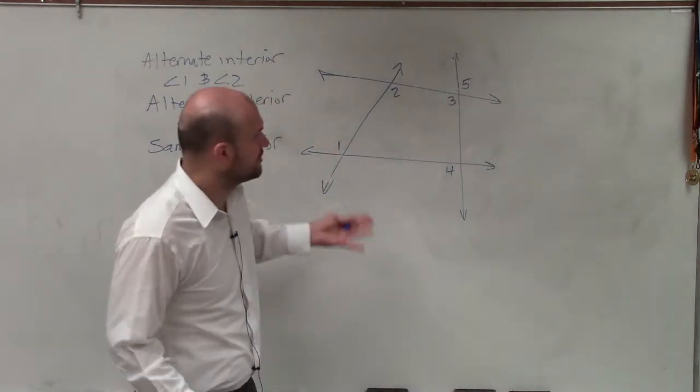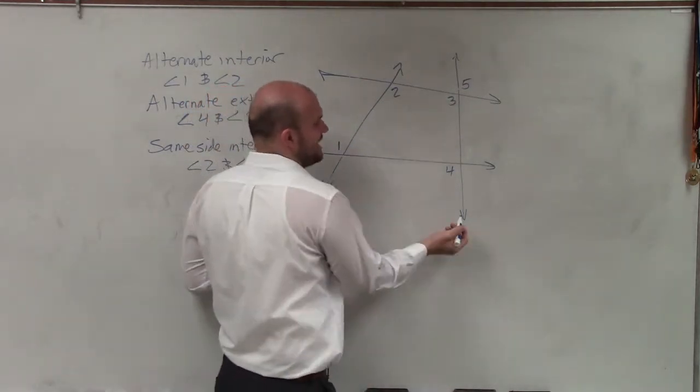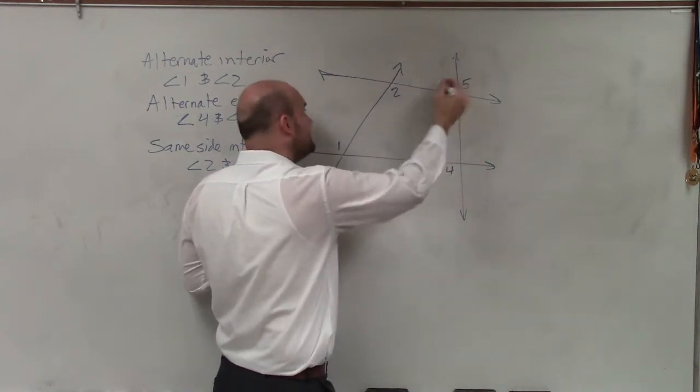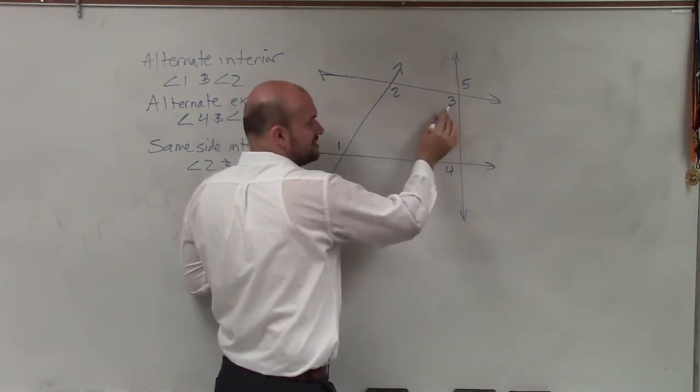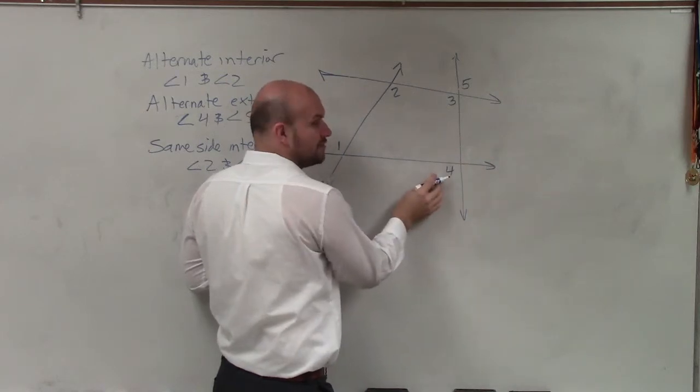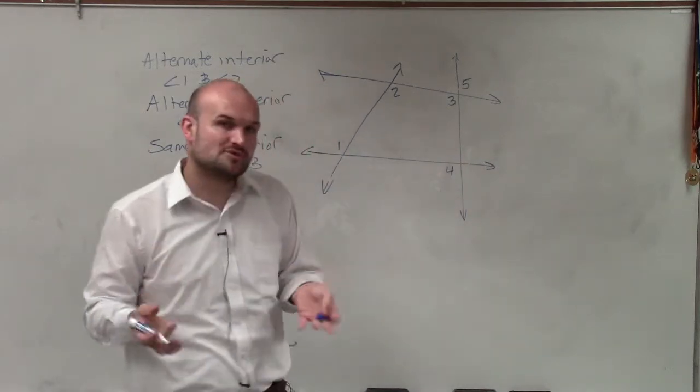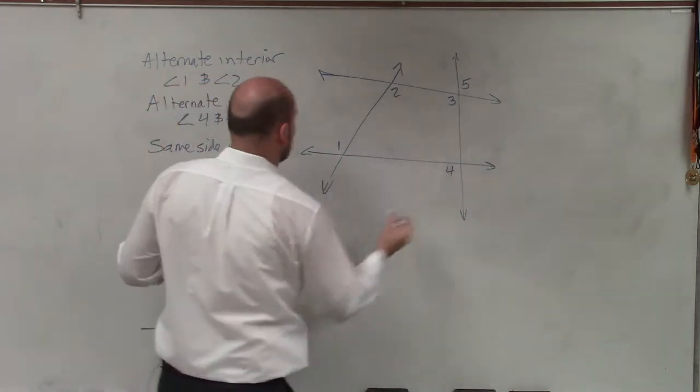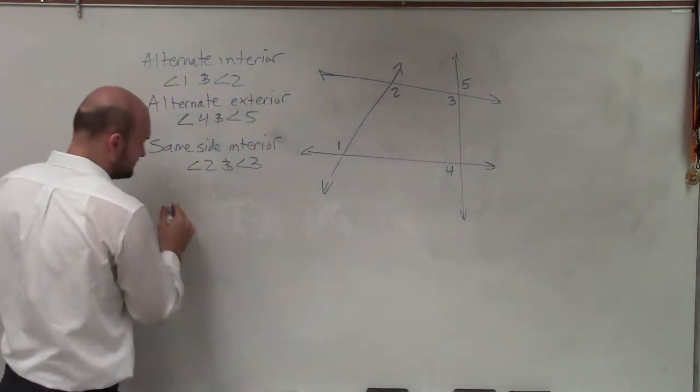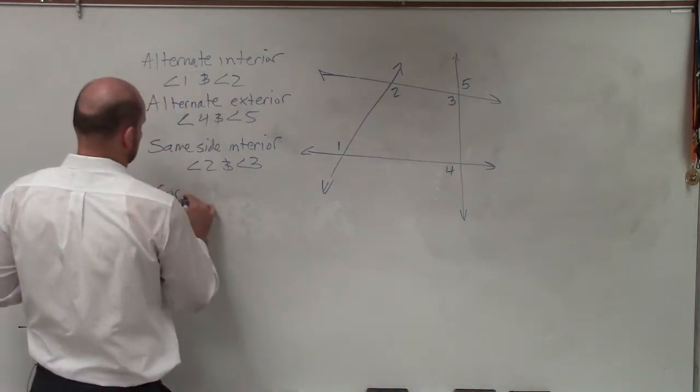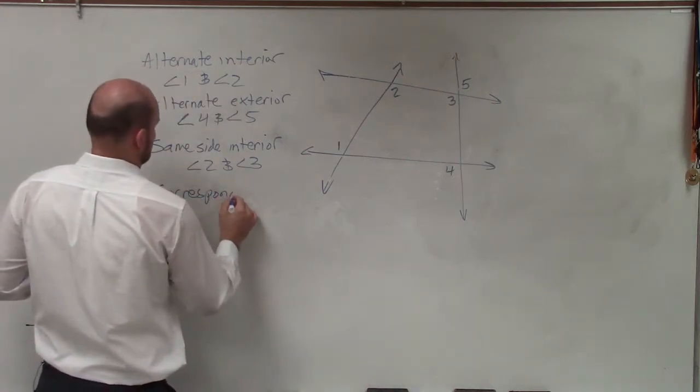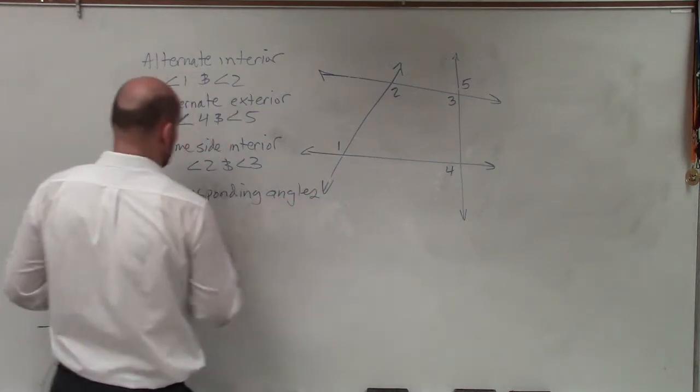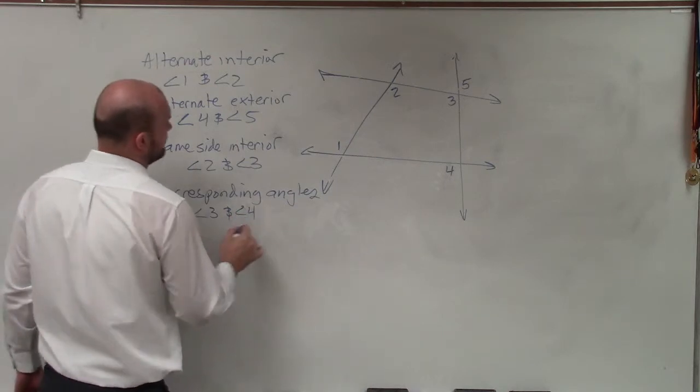So corresponding, what they mean is they are in the exact same spot. So you can see here's an intersection and here's an intersection. In the lower left-hand corner of that intersection is angle three. In the lower left-hand corner of this intersection is angle four. Therefore, they're corresponding. They're in the exact same position of that intersection. So therefore, we can say corresponding angles would be angle three and angle four.